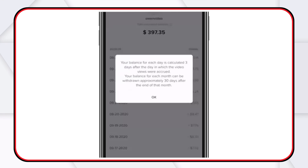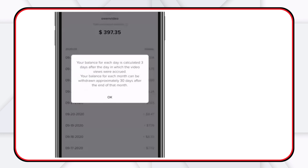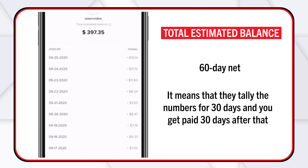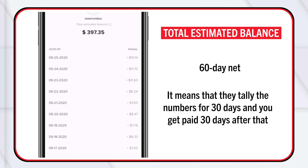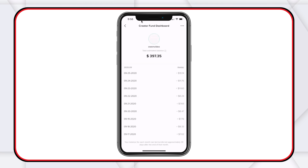Your balance for each month can be withdrawn approximately 30 days after the end of the month. This is kind of what we'd call a 60-day net — they tally the numbers for 30 days, and then you can get paid 30 days after that. For younger creators that might seem frustrating, but in the business world, 60-day or 90-day net is pretty normal, because they have to make sure all their numbers are correct.